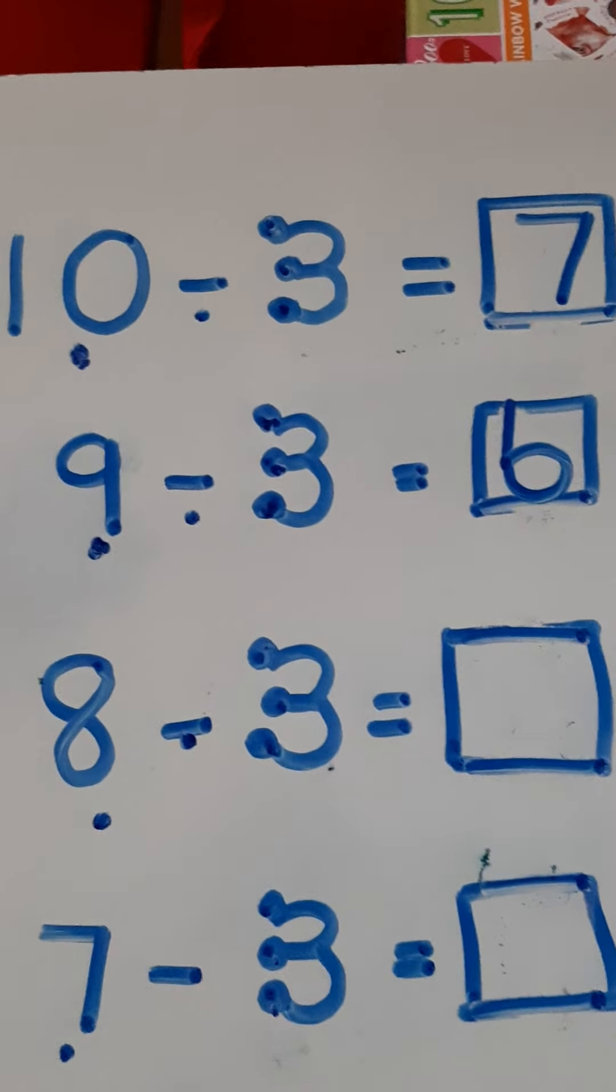Let's try 9 take away 3. Nine, tap 9, then count backwards: 9, 8, 7, 6. So 9 take away 3 equals 6.